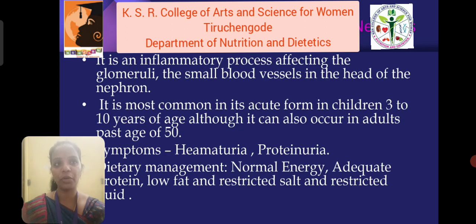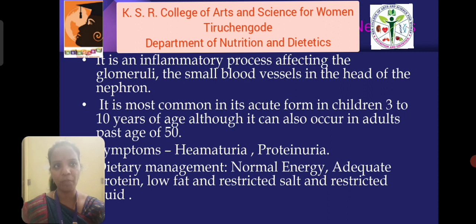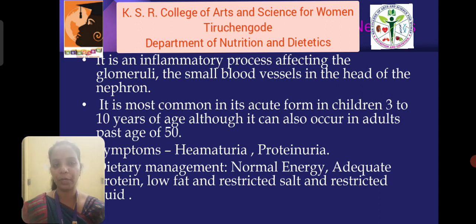First of all, we are going to discuss about glomerulonephritis. It is an inflammatory process affecting the glomeruli, small blood vessels in the head of the nephron. It is most common in its acute form in children from 3 to 10 years of age, although it can also occur in adults past the age of 50. Symptoms like hematuria and proteinuria are observed. Dietary management: normal energy, adequate protein, low fat, restricted salt and fluid is recommended.